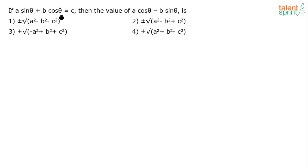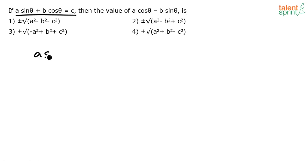If a·sinθ + b·cosθ = c, then what is the value of a·cosθ - b·sinθ? One equation has been given: a·sinθ + b·cosθ = c. I'll explain the regular method first and then give you the smart way of solving it.